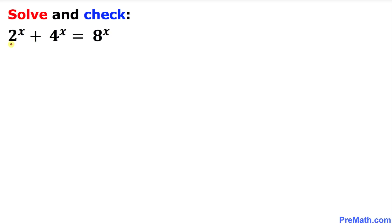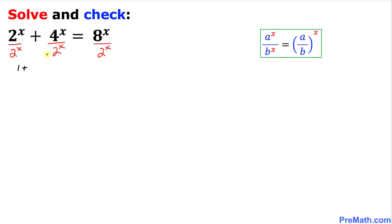The very first step that I am going to do is I am going to divide across the board by this 2 power x. So 2 power x and 2 power x — that is going to give us 2 power x and 2 power x is going to give us 1 plus, and to simplify this we are going to use this rule of exponent.